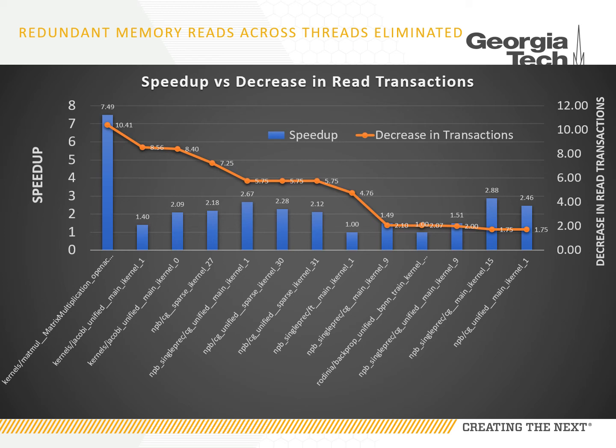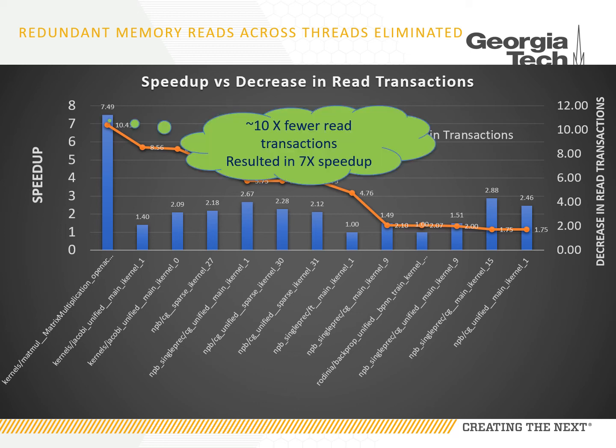This chart shows the speedup on the left axis and the decrease in number of read transactions on the right axis. This is another interesting side effect of our transformation, and for some of the kernels, the decrease in read transactions contributes to the speedup. For example, for the matrix multiplication kernel, there are 10 times fewer reads and it resulted in a 7x speedup.